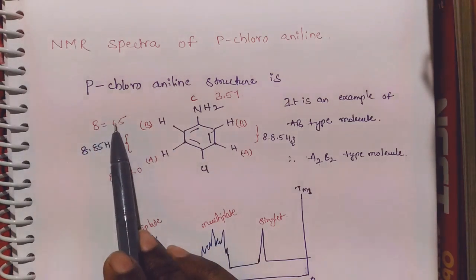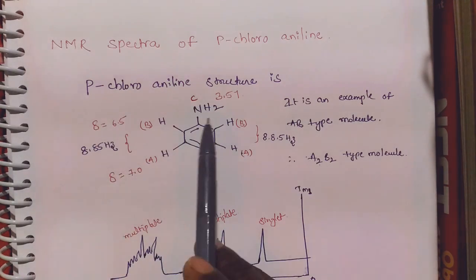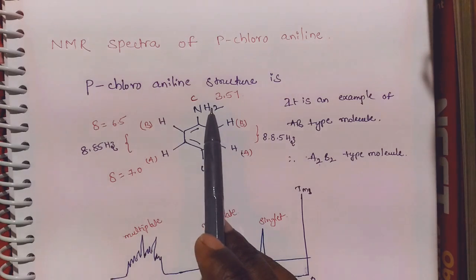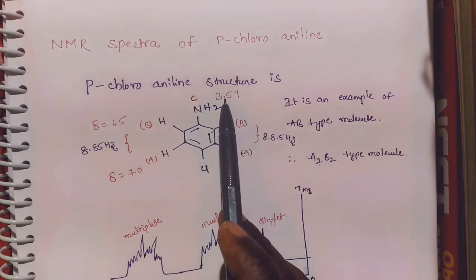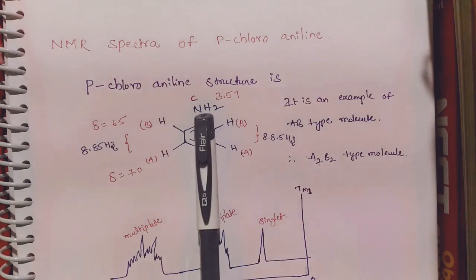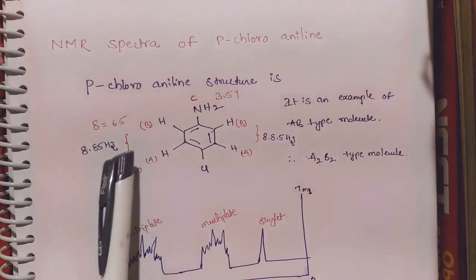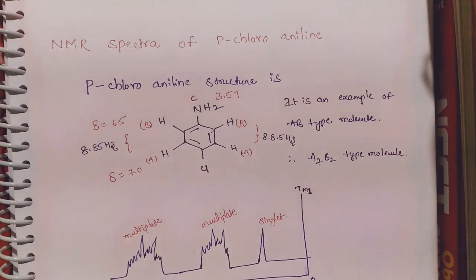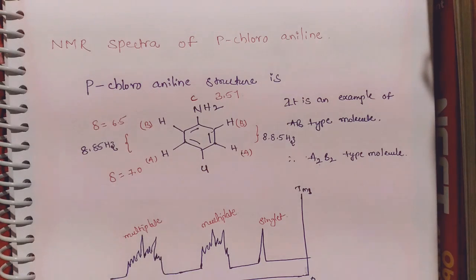The chemical shift value of B-type protons is 6.5, and the A-type protons have a chemical shift value of 7.0. The amine functional group (NH2) gives an NMR signal with a chemical shift range of 3.57. In the spectra, the NH2 gives a singlet signal, the 2 B-type protons give a multiplet at 6.5, and the A-type protons give a multiplet at 7.0.